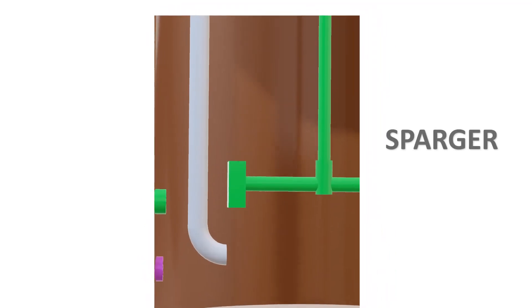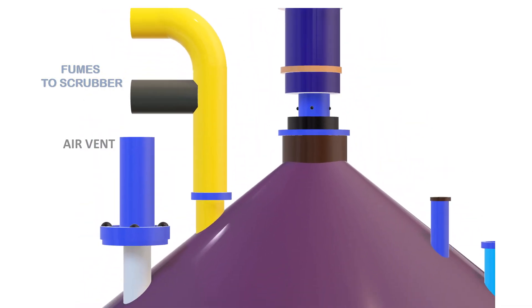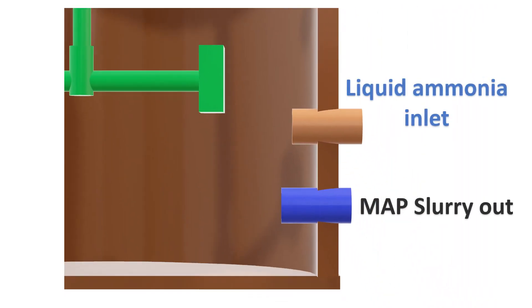It is equipped with inlet piping of liquid ammonia, phosphoric acid, vapor ammonia and scrubber liquors, defoaming line. The outlet piping are provided for MAP slurry pumping, a vent to scrubber and an air vent with rupture disc.